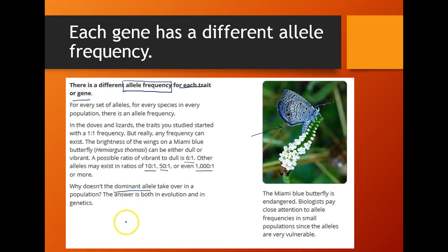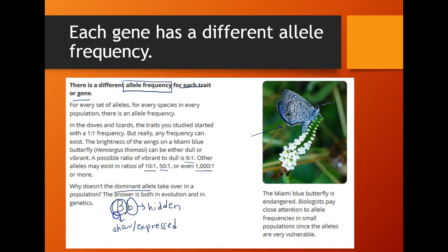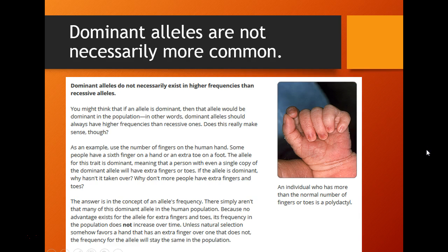A common question is: why doesn't the dominant allele just take over? If we have big B and little b, big B would be expressed and little b would be hidden — so why don't dominant alleles eventually make recessive ones extinct? An example: having six fingers is actually a dominant trait, yet most babies are not born with six fingers even though it is dominant.